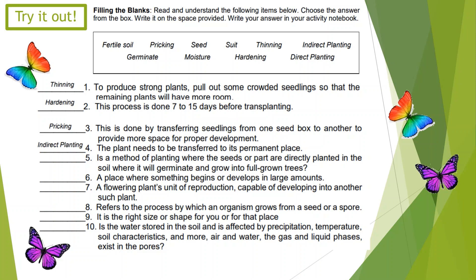Number 5: It's a method of planting where the seeds or parts are directly planted in the soil where they will germinate and grow into full-grown trees. The correct answer is direct planting.